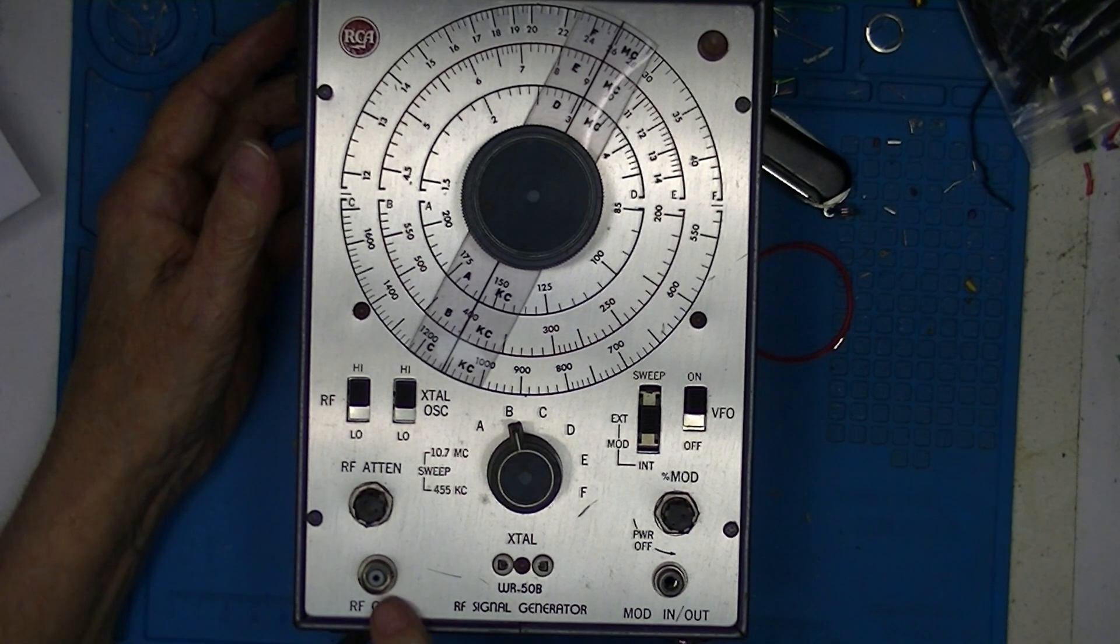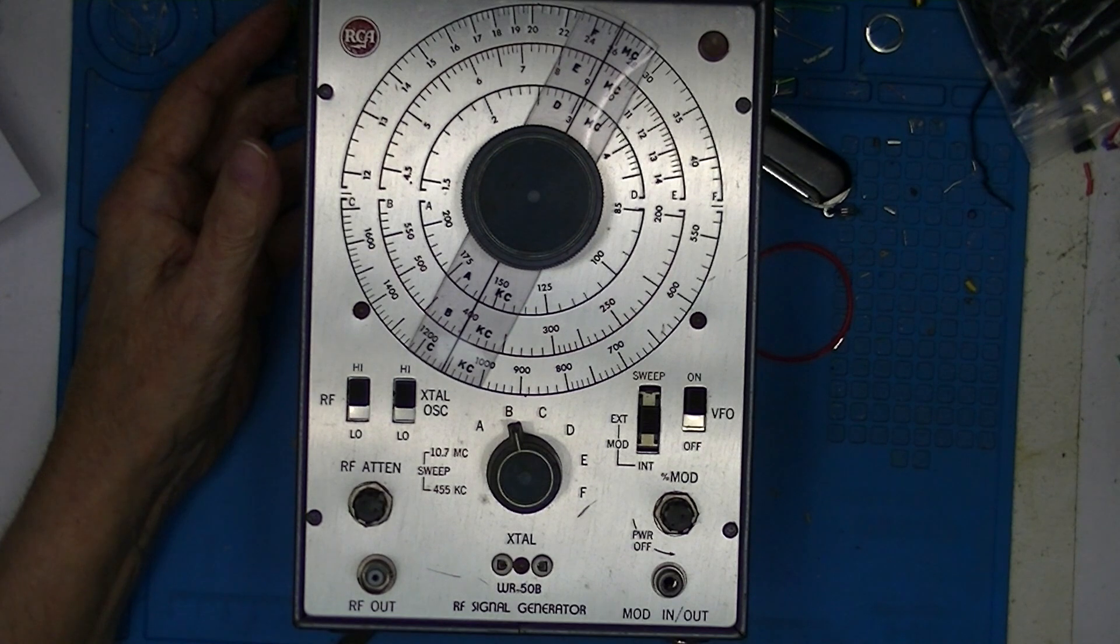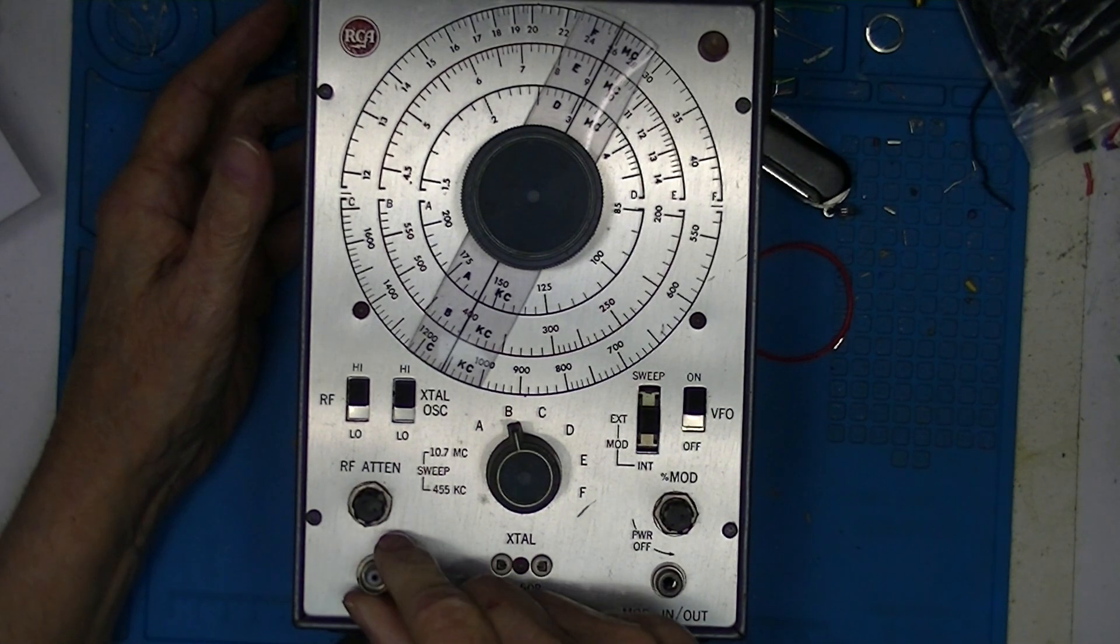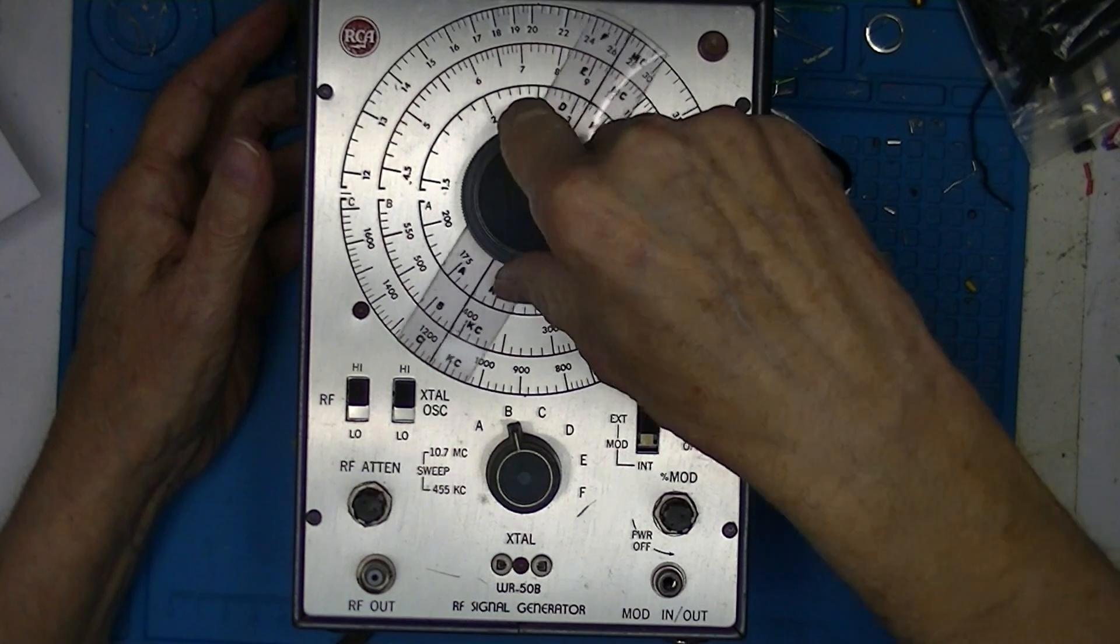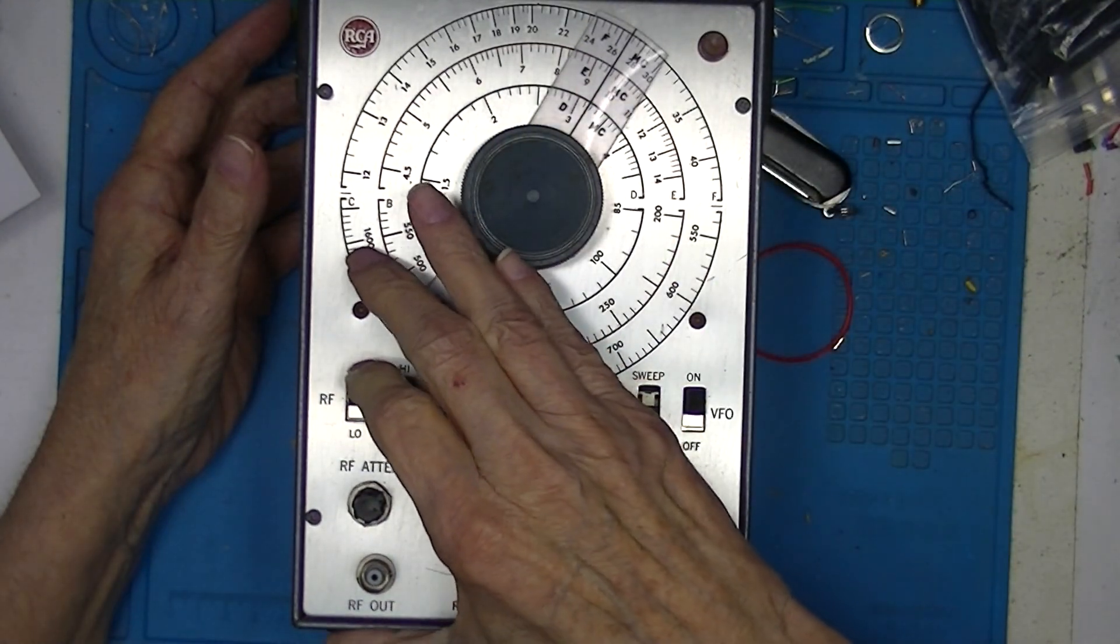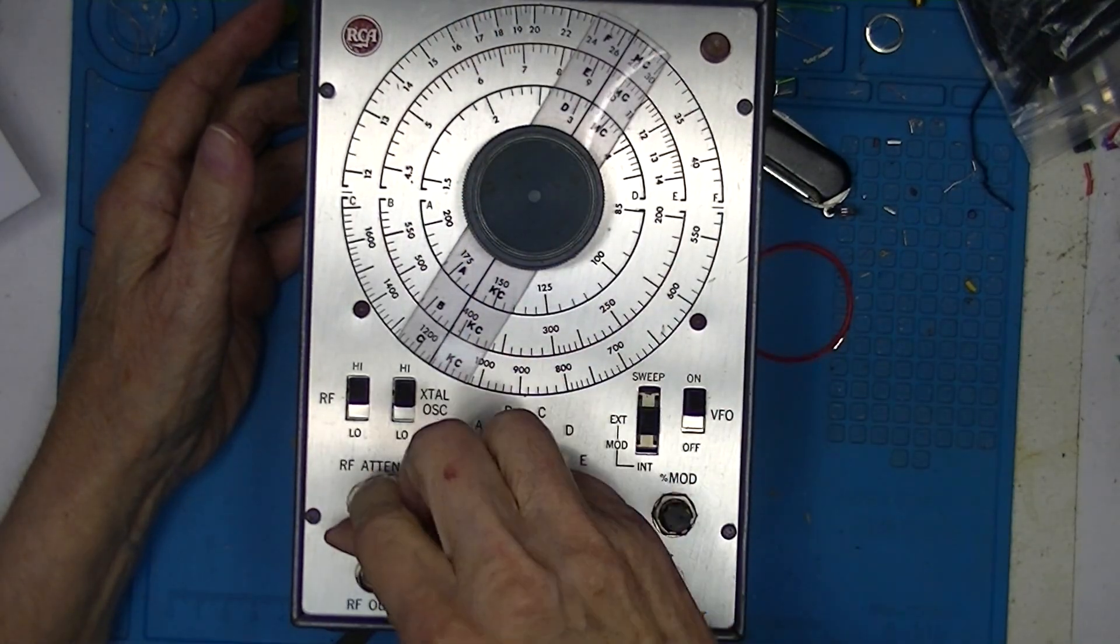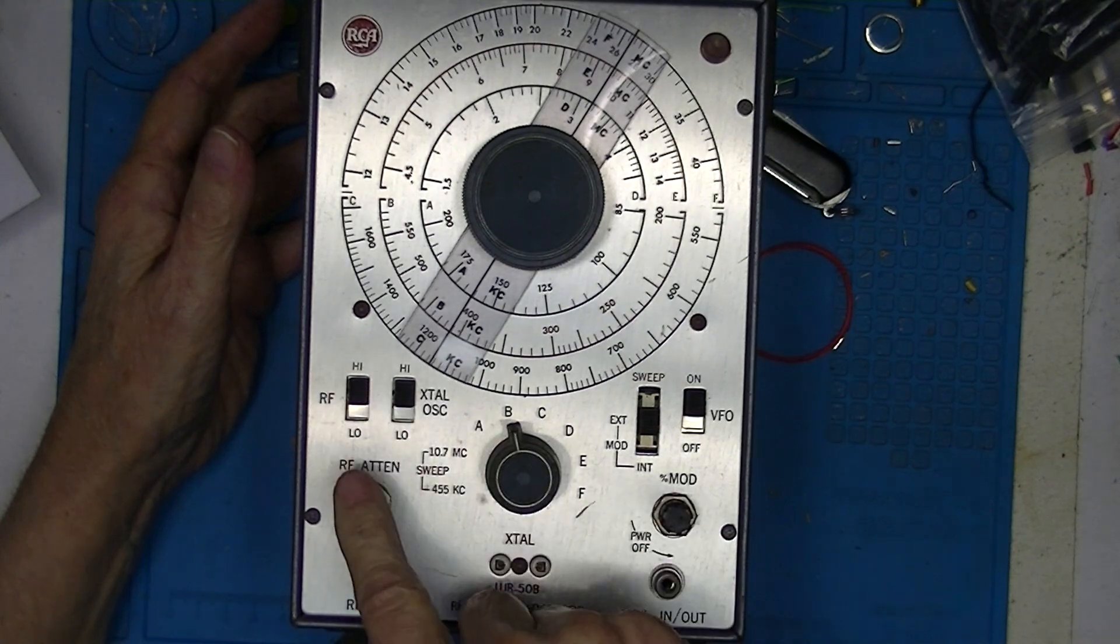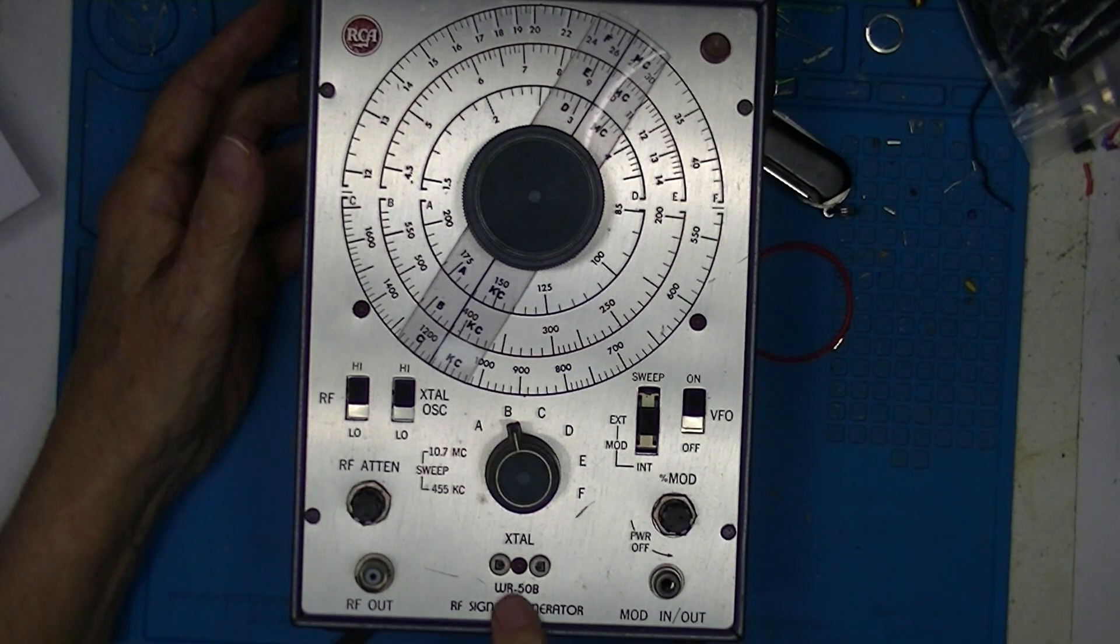This particular one has a BNC connector output. I'm not sure that's standard. I've seen it before but usually these things had a permanently attached coaxial cable coming out of them. In addition to a range switch and a frequency selection switch, we have an RF output high-low switch and a potentiometer for fine RF attenuation.